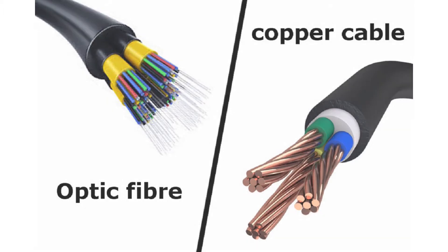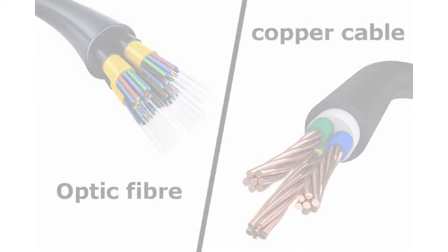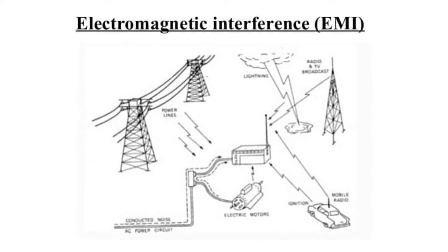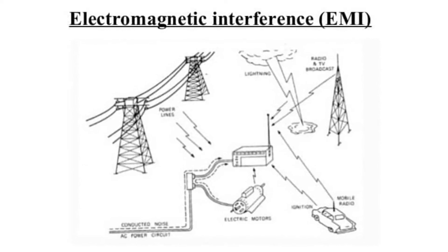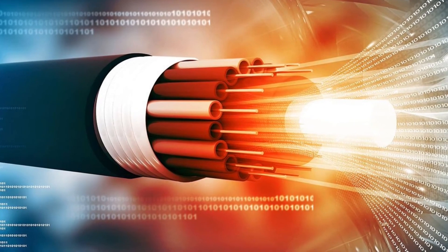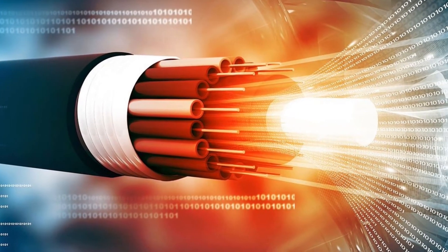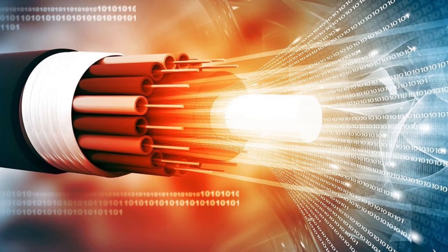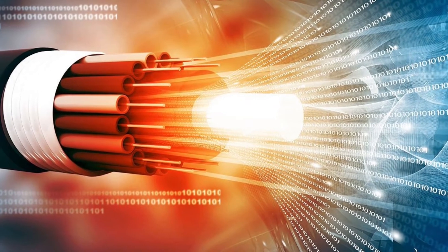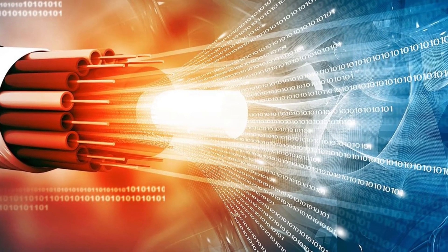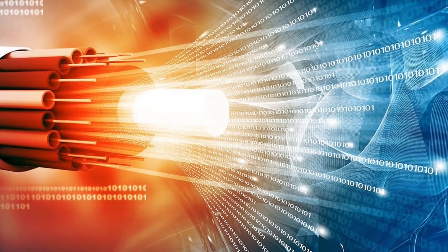In addition, fiber is immune to electrical interference from radio frequency interference and electromagnetic interference. Fiber historically has supported much higher bandwidth than copper, although recent technological advances have made copper capable of transmitting at 100 megabits per second.